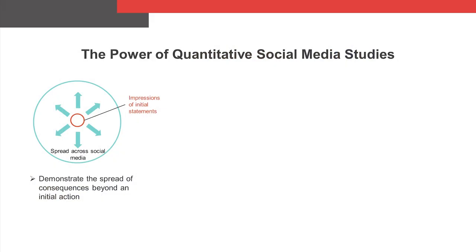When done correctly, quantitative social media analyses generate powerful evidence. These types of analyses make it possible for experts to support conclusions about the spread of consequences beyond an initial action. They can similarly show the before-and-after effect of a particular action on consumer discussion or interpretation. For instance, a quantitative social media analysis could be an effective tool for measuring the spread of consumer confusion following the launch of an allegedly confusing new product.